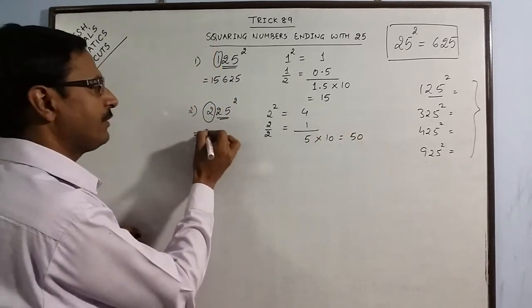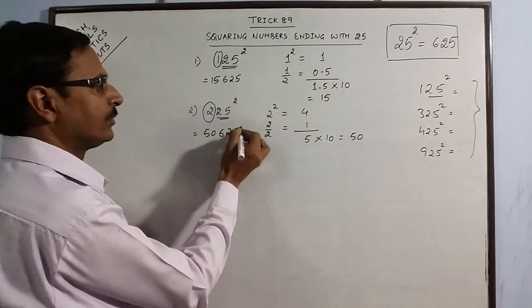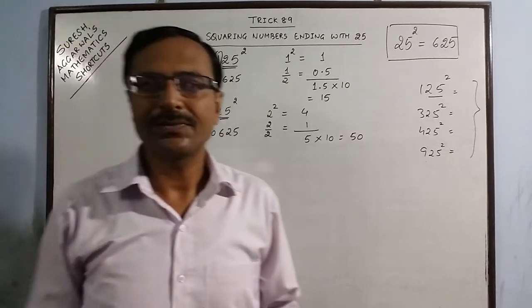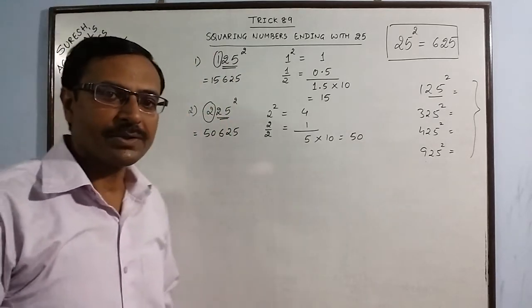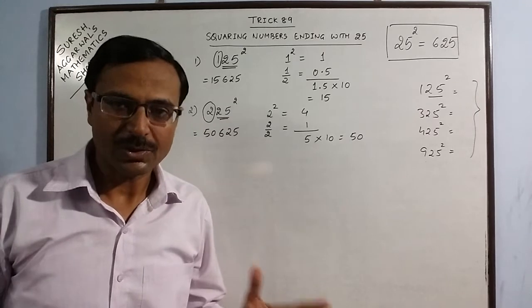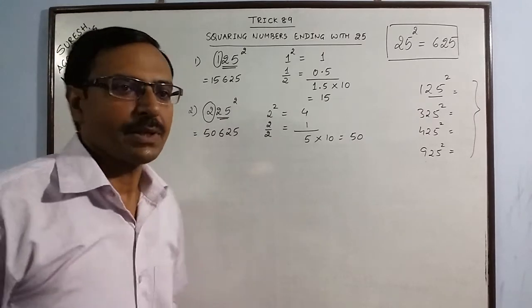So your answer is 50 followed by 625. 225 square is 50625. Likewise, you can go on and on and calculate squares of very, very large numbers also. So let us try some bigger numbers now.